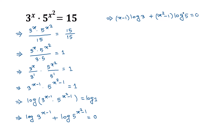Now applying the difference of squares formula — a squared minus b squared equals (a plus b)(a minus b) — we can write x squared minus 1 as (x plus 1)(x minus 1). So the equation becomes: (x minus 1) times log 3, plus (x plus 1)(x minus 1) times log 5, equals 0.